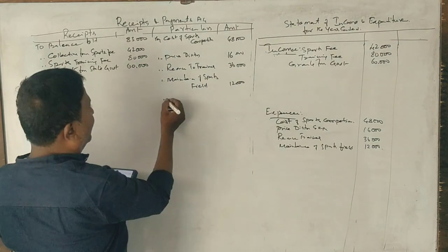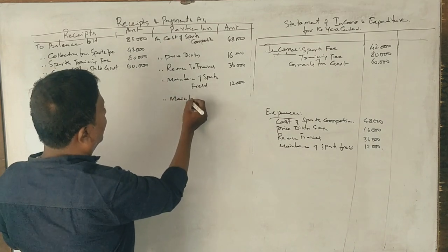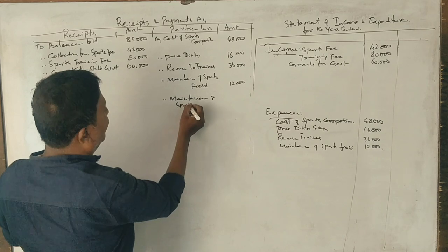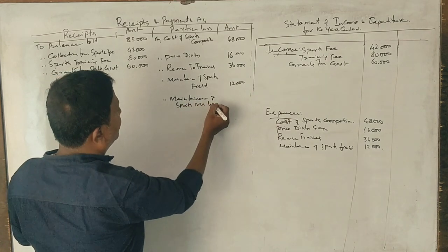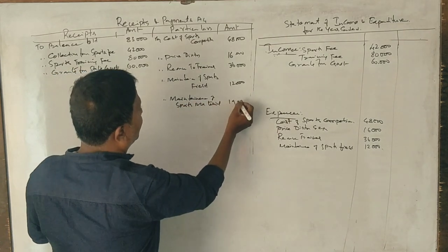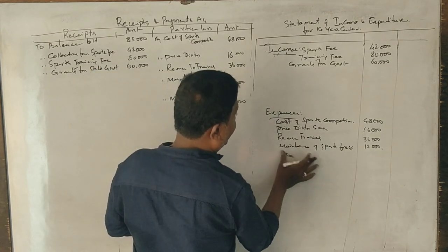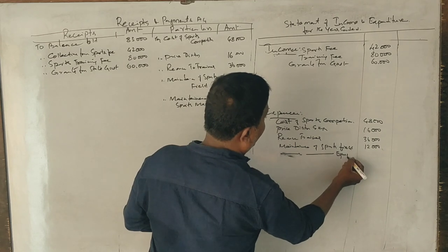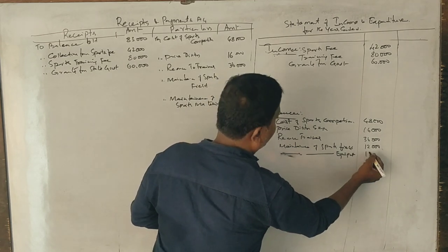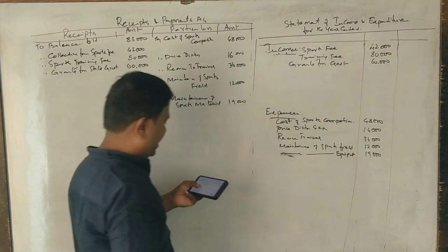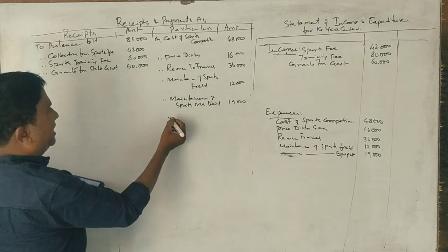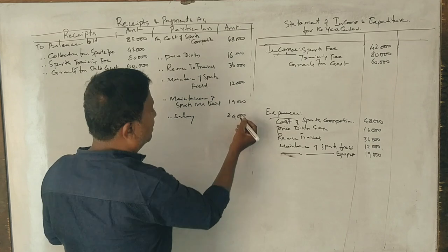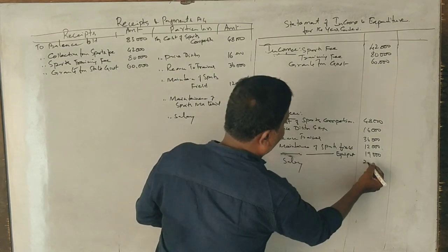Maintenance of sports equipment and materials, 19,000. Next, salary, 24,000. Salary, 24,000.